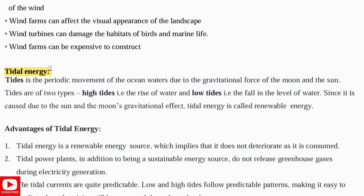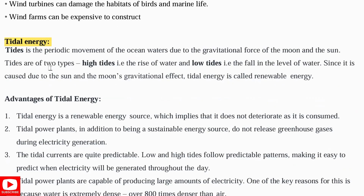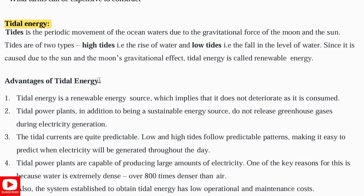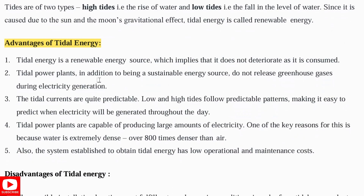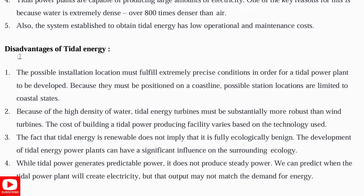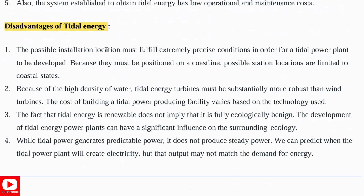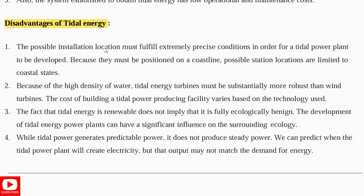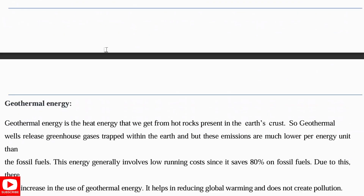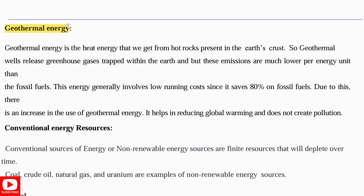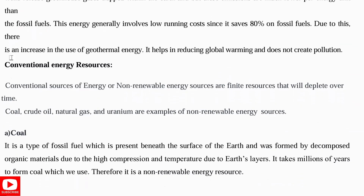Next is tidal energy — this is due to the periodic movement of ocean waters caused by the gravitational force of the moon and sun. There are two types: high tides and low tides. Advantages include: it is renewable and quite predictable, and tidal power plants are capable of producing large amounts of electricity. Disadvantages include difficult installation and problems due to the high density of water. Next is geothermal energy — heat energy obtained from hot rocks in the earth's crust.